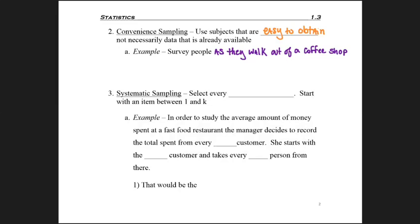A third method is called Systematic Sampling, and this is where you select every kth item, where you start with some item between 1 and k, which at first might sound confusing, so let's look at an example so it makes a little bit more sense. In order to study the average amount of money spent at a fast food restaurant, the manager decides to record the total spent from every, randomly picks the number 12, from every 12th customer.